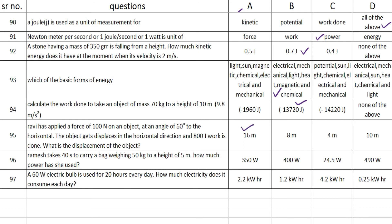The answer is option A — 16 meters. The next one: Ramesh takes 40 seconds to carry a bag weighing 50 kg to a height of 5 meters. How much power has he used? The correct option is option D — 490 W.